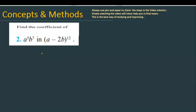The question is: find the coefficient of a raised to the power 5 into b raised to the power 7 in (a minus 2b) total raised to the power 12.